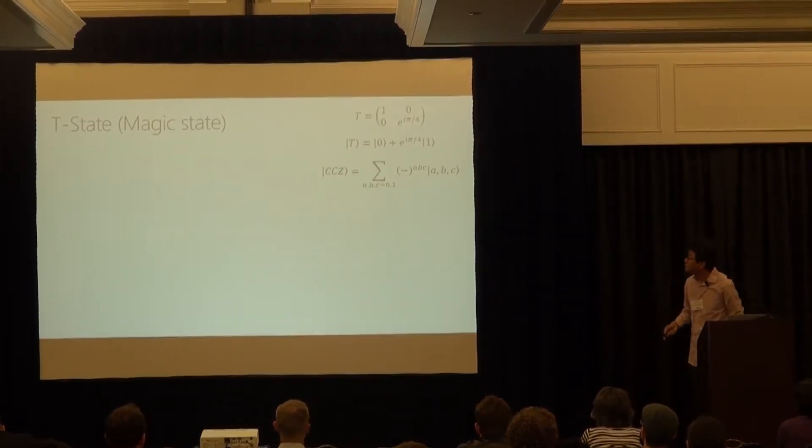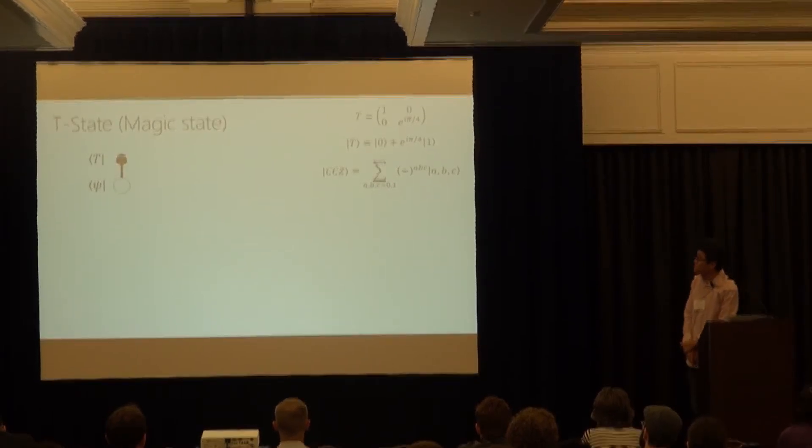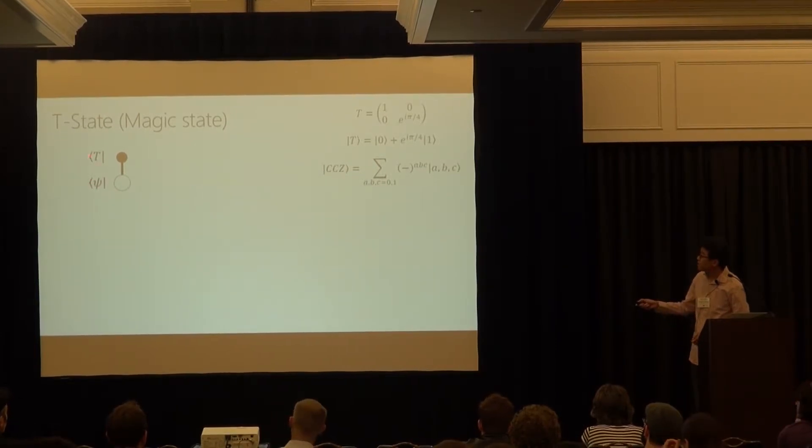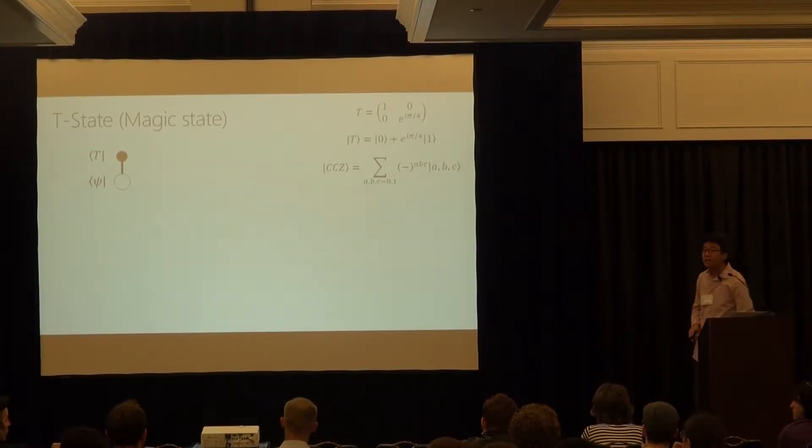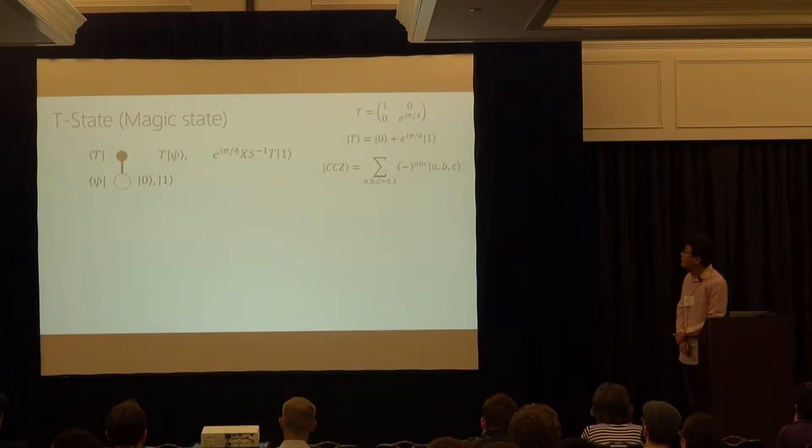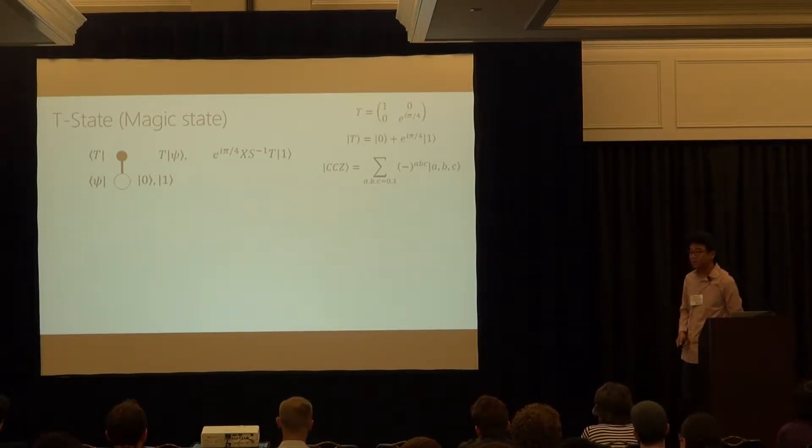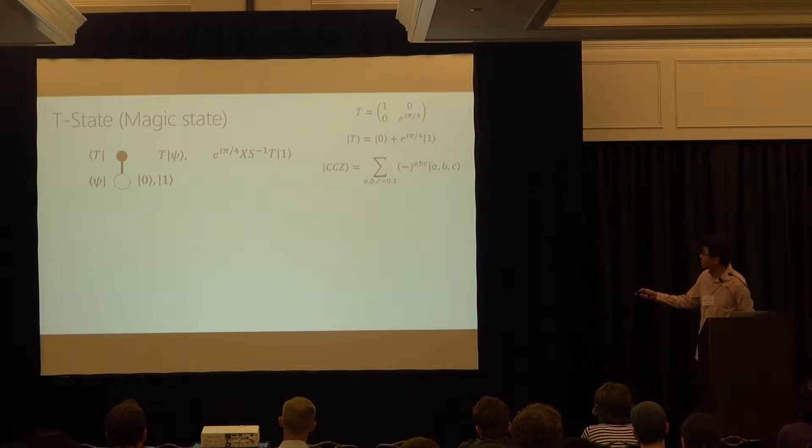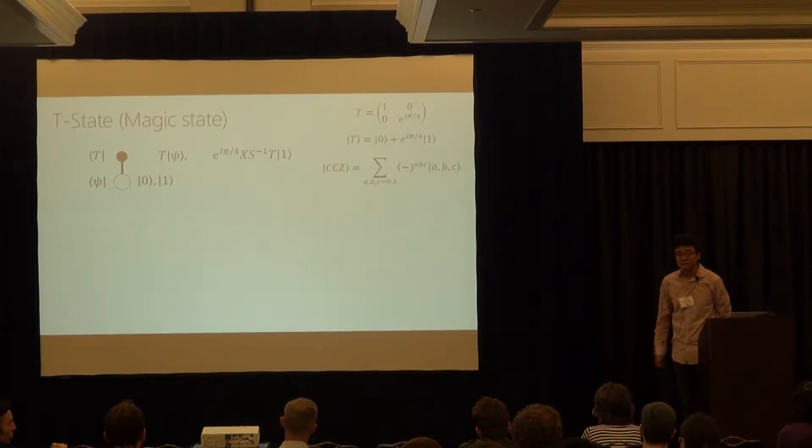And if you are given with a T-state, then you can implement T-gate in this fashion. You are provided with an arbitrary unknown state, and you inject certain T-state, and then you apply C-not, and then you measure, and based on the measurement outcome, you Clifford correct the outcome. And the net effect is to implement T-gate. There are other T-gates, which I will mention later. There is a C-C-Z-gate, sorry, C-C-D-state, which can be injected in a similar fashion in order to implement C-C-Z-gate.